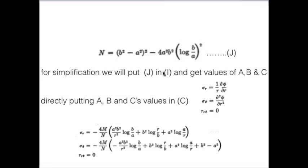We are putting J, these equations in I, so we will get these three values A, B and C. So directly putting A, B and C's values in equation C. Equation C was σ_r, σ_θ and τ_rθ. If we put A, B and C's equations in all these equations, we will get finally stress which is our unknown. So for a curved bar in pure bending, now we have derived the radial stress, circumferential stress, and shear stress.